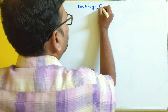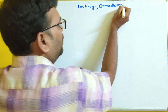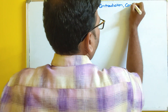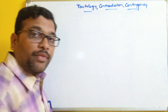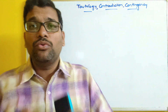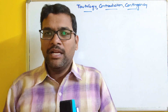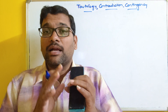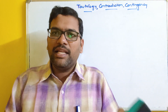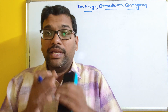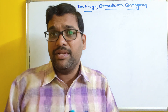Tautology, contradiction, and contingency in discrete mathematics. We will go one by one. Before going to that, we have to know about what is a compound statement or a statement formula. Combining multiple simple propositions, we form a compound statement. In the compound statement, we use different connectives — all these things we have discussed in our previous sessions.